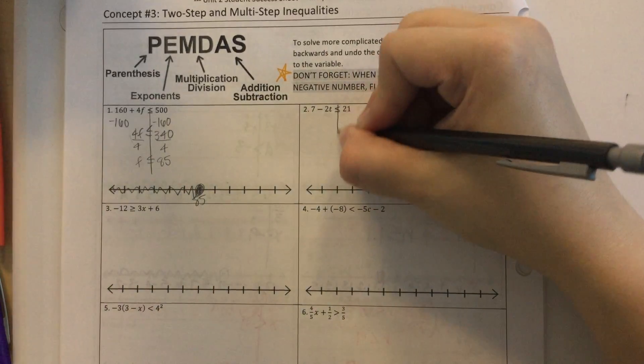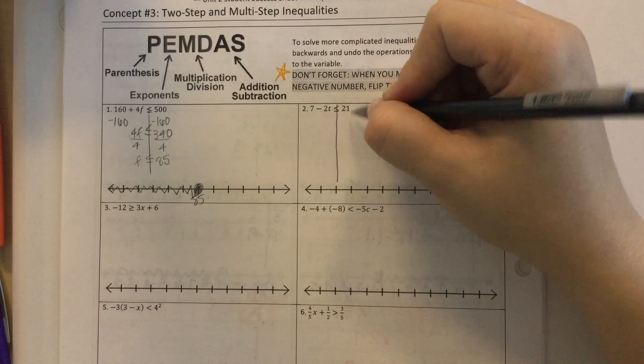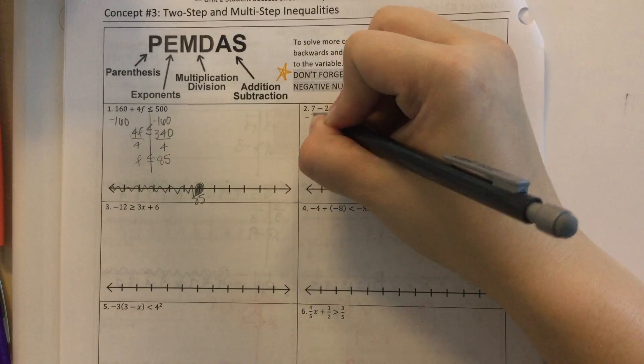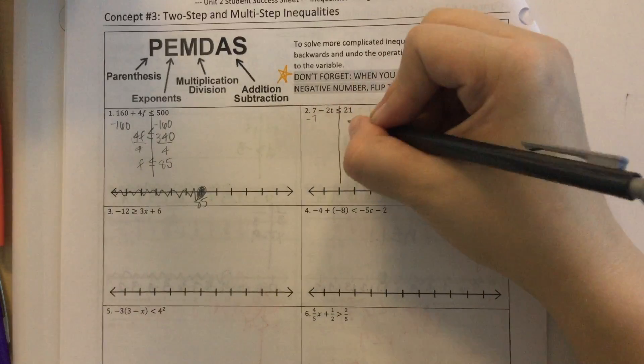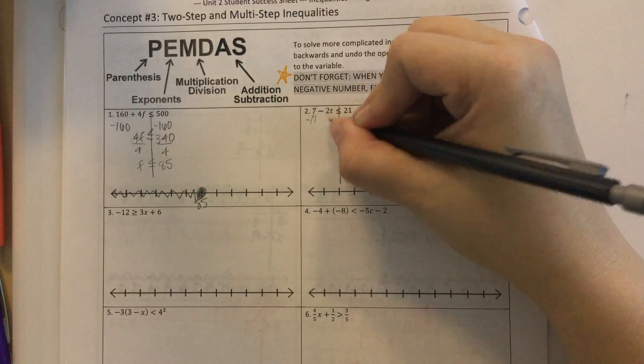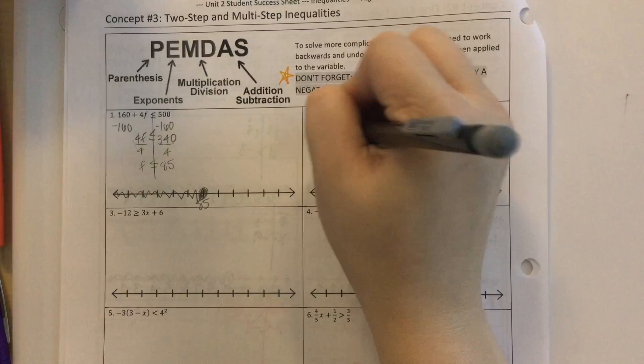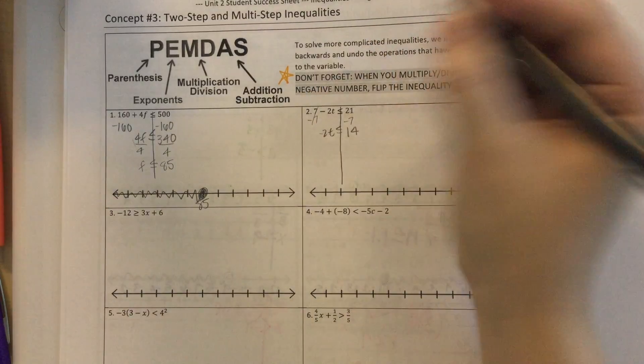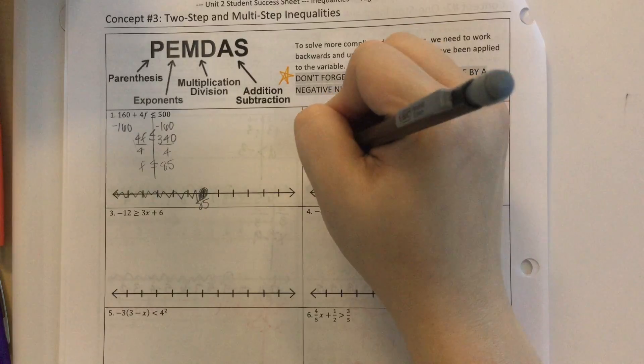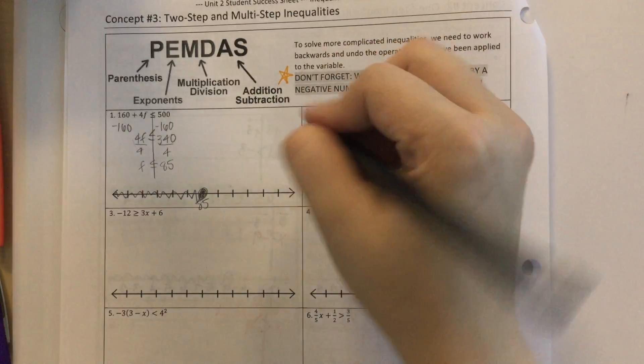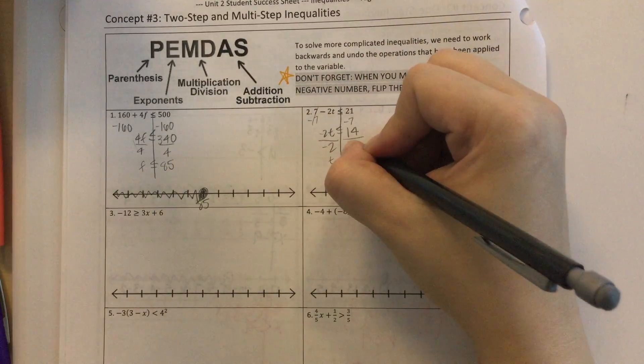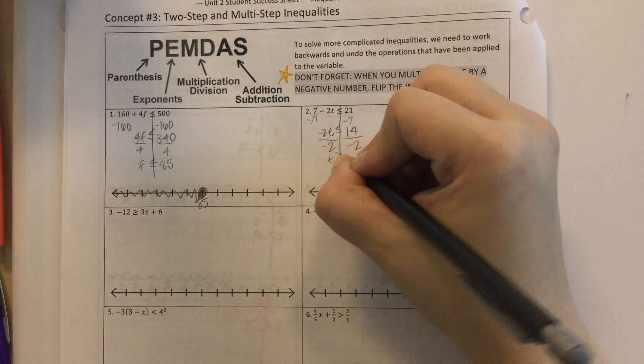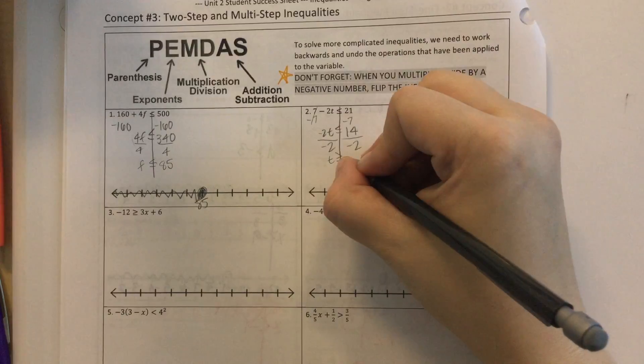Okay, number 2. 7 minus 2T is less than or equal to 21. Since 7 is positive, I need to subtract it, because 7 minus 7 is 0. Okay, so I have negative 2T less than or equal to 14. I'm going to divide by negative 2, so I have to flip the sign around to the opposite direction. And 14 divided by negative 2 is negative 7.